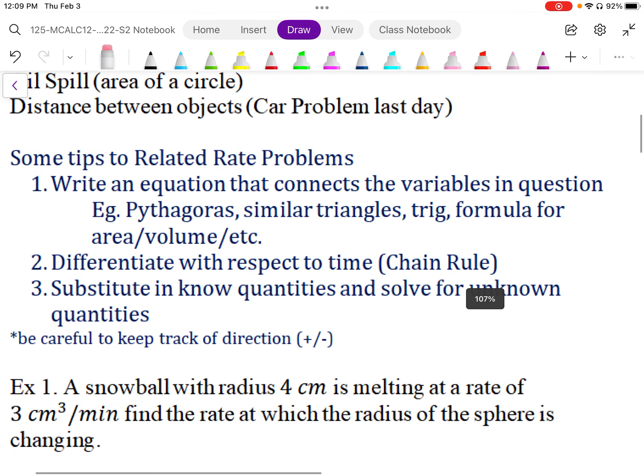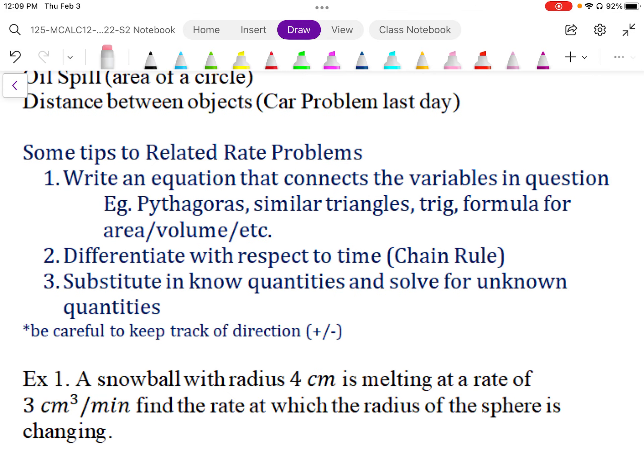So there's some tips for related rates. First of all, we want to write an equation that connects the variables in question. If we have a volume problem with radius, we want to have an equation that relates volume and radius. If we have distance x's and y's, we want to have an equation that relates the x and y positions to a distance. Usually, that would be Pythagoras.